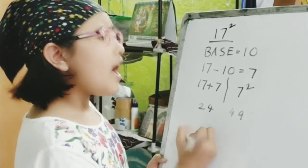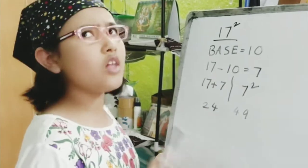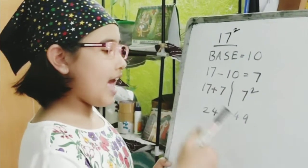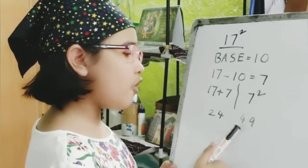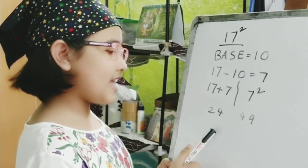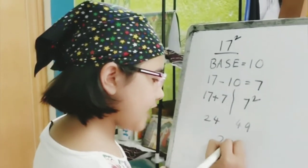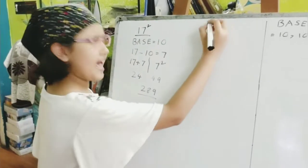Now, as the base number has only 10 at the right side, we will also have one number at the right side. And so, the 9 will be here and the 4. This 4 will be added with 24. And we'll get the answer as 289. Now, let's take another number, 19.